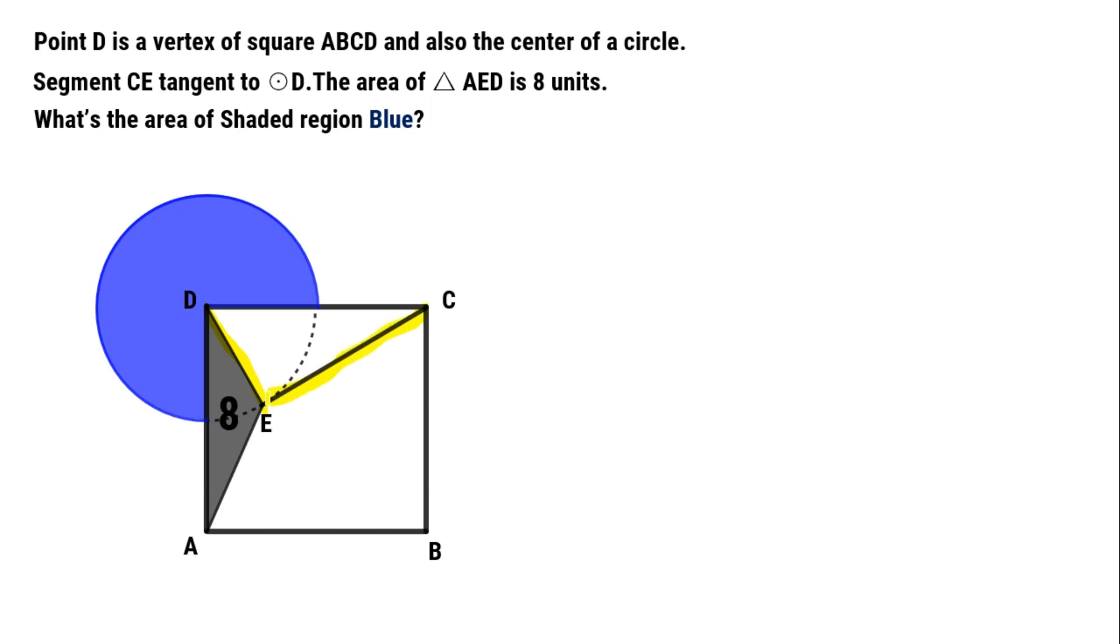CE is tangent to the circle, and DE is the radius. We can get DE perpendicular to CE. Through point D, make a perpendicular segment against DE. This intersects the circle at point F. Then connect AF.